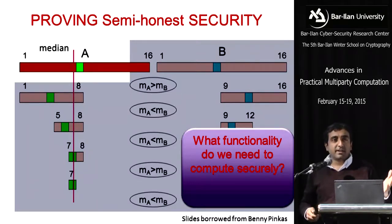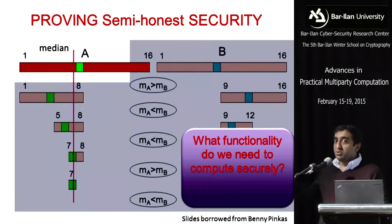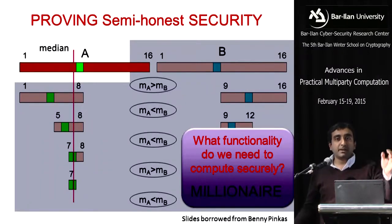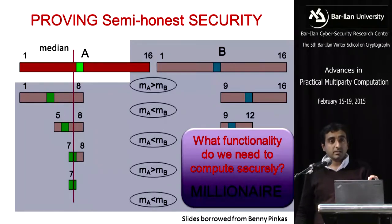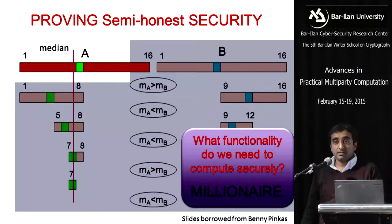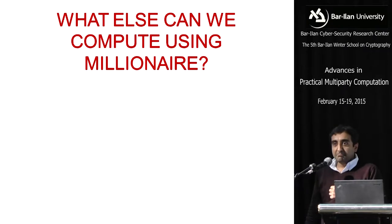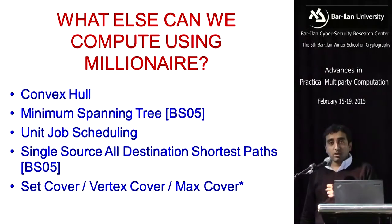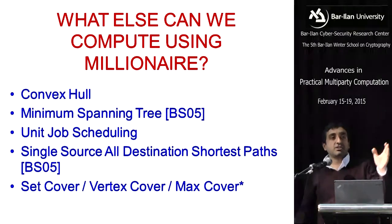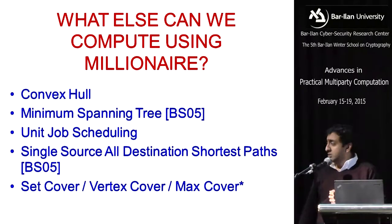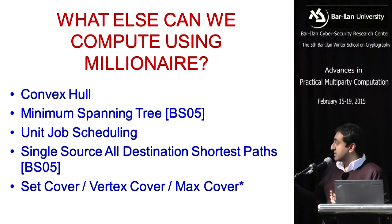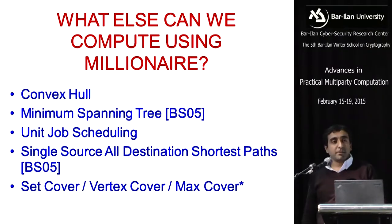What is the function that you need to securely compute to implement this functionality? It's just comparison — just millionaire. Every step you just do a millionaire computation securely. It's a very simple primitive that you can make very efficient. So what else can we compute using millionaire? In our work, we show that we can do a whole lot of things we can securely compute where in each iteration all we are going to do is a comparison. Examples include convex hull, minimum spanning tree, some job scheduling problems, Dijkstra, and some approximation algorithms.